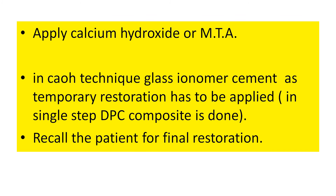Once hemostasis is achieved, apply calcium hydroxide or MTA over the exposed pulp. In the calcium hydroxide technique, glass ionomer cement should be given as a temporary restoration. If doing it in a single step, you can proceed with composite restoration in the same appointment. Then recall the patient, check for vitality, check for periapical lesion, and take the patient's history. If everything is normal, proceed with your final restoration.